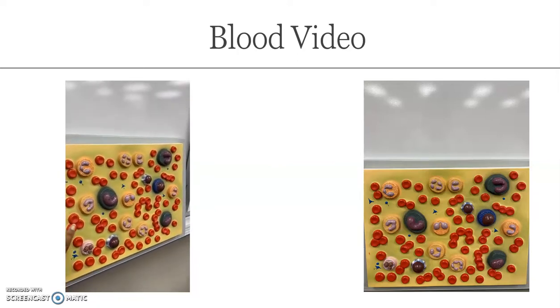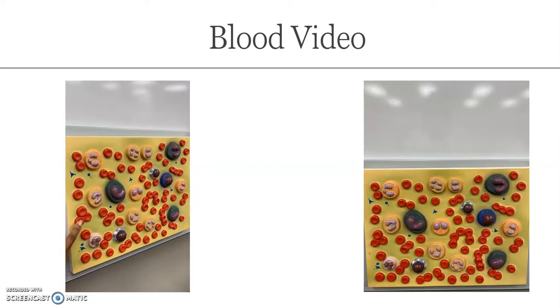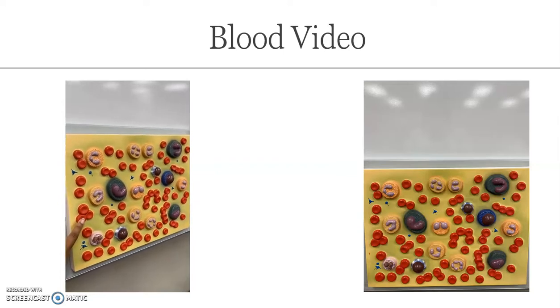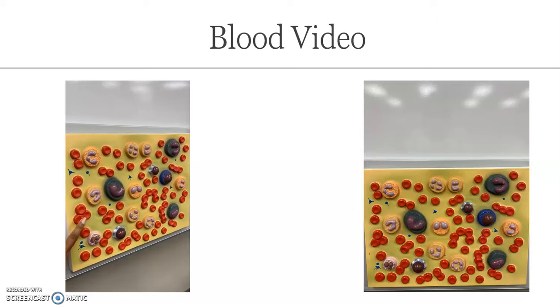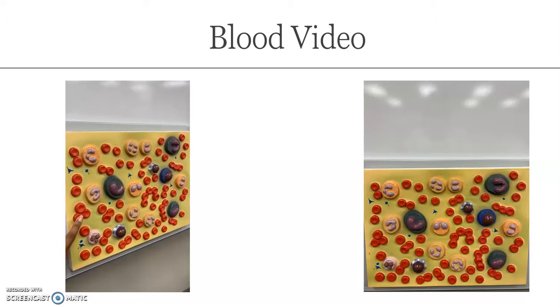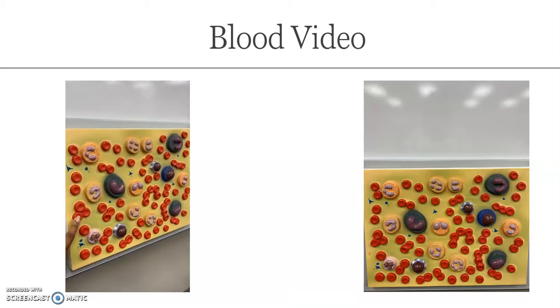The first type is your red blood cells. They are called erythrocytes — 'erythro' for red, 'cytes' for cells. So your red blood cells are erythrocytes.